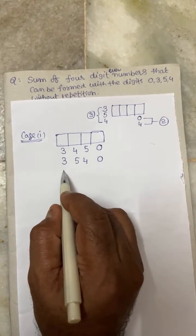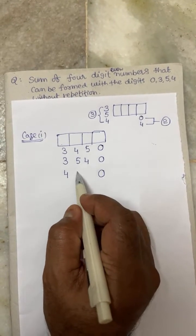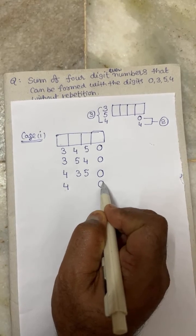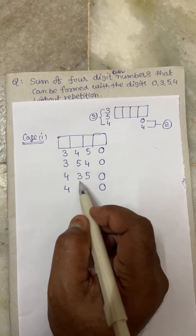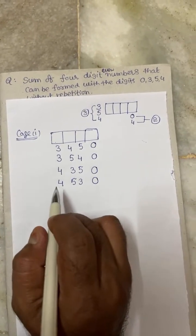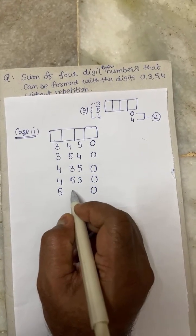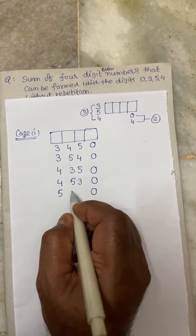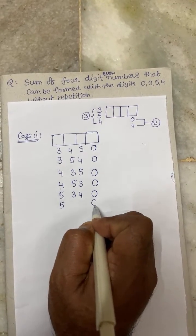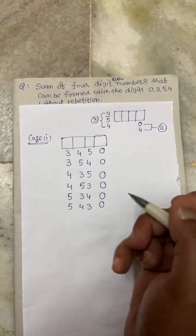Next, four will be in the last place and zero in the unit place, with three and five filling the remaining positions — giving 4350 and 4530. Then five will be in the last place and zero in the unit place, with three and four in the remaining two places — giving 3450 and 4350 variants. These are all the possibilities in Case 1.